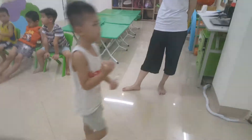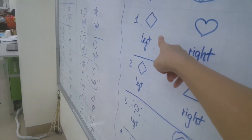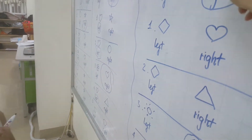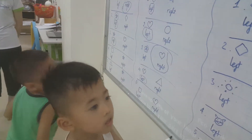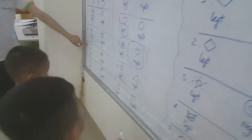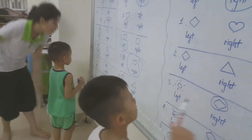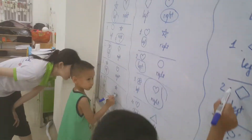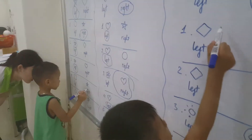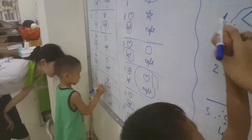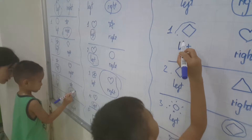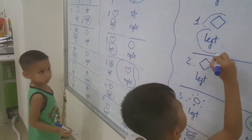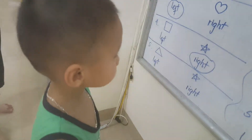Number one, find me the diamond. Number four, find me the star. Where is the diamond? Circle — left or right? Where is the star? On the left or on the right?